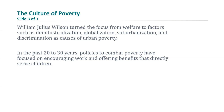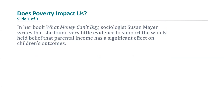Sociologist William Julius Wilson turned the focus from welfare to factors such as de-industrialization, globalization, suburbanization, and discrimination as causes of urban poverty. In the last 20 to 30 years, policies to combat poverty have focused on encouraging work and offering benefits that directly serve children, often failing adults.